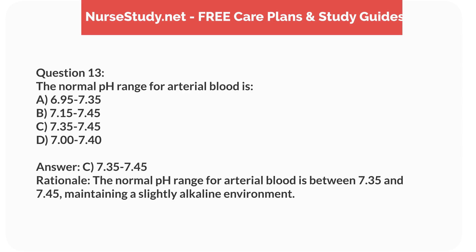Answer: C. 7.35 to 7.45. Rationale: The normal pH range for arterial blood is between 7.35 and 7.45, maintaining a slightly alkaline environment.